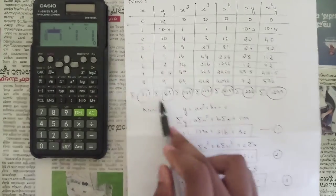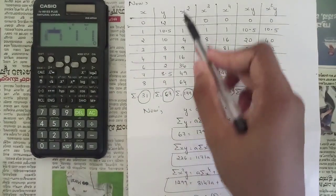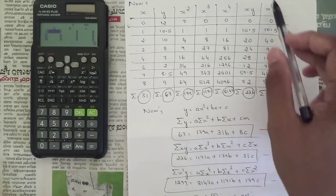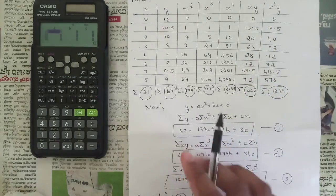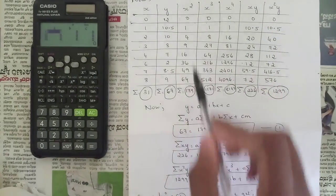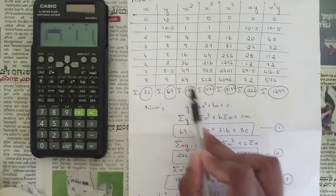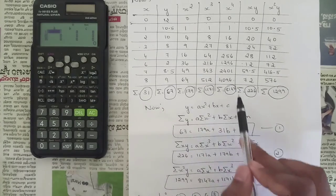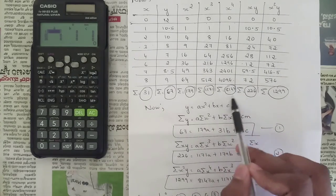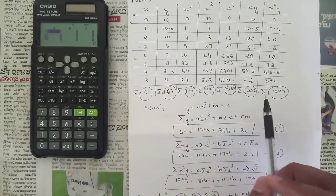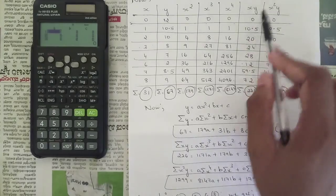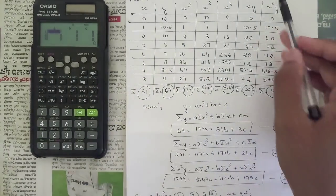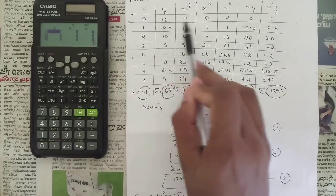Put the values of x and y and take the summation respectively. We got summation of x = 31 and summation of y = 67. Summation of x² = 179, summation of x³ = 1171, summation of x⁴ = 8147, summation of xy = 226, and summation of x²y = 1299.